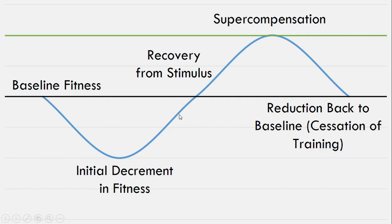This recovery from the stimulus hits a peak up here. However, without another training session our fitness level will go back to the baseline — this is the basic principle of general adaptation syndrome. Once we do a training session we want to do another one to continue that supercompensation effect and keep progressing. If we perform a training session in the right window, we'll have another initial decrement in fitness and then another supercompensation at a greater level than before.